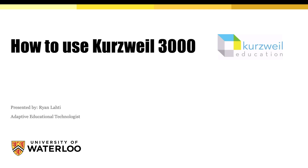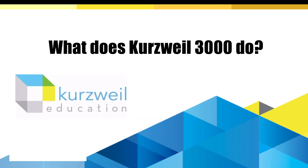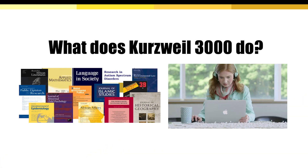Welcome to the how to use Kurzweil 3000 tutorial. Kurzweil 3000 is text-to-speech software often used by university students to read documents. It is a text-to-speech application or screen reader that can be used to read aloud documents and websites.